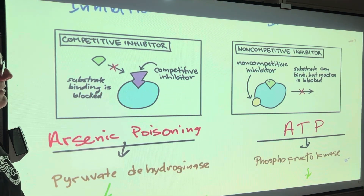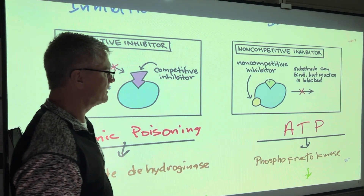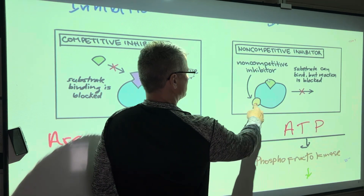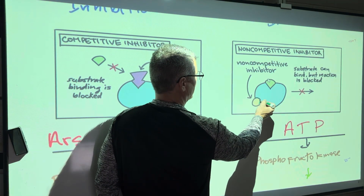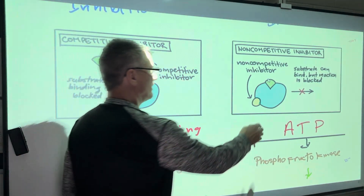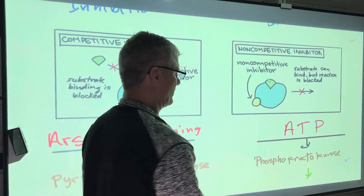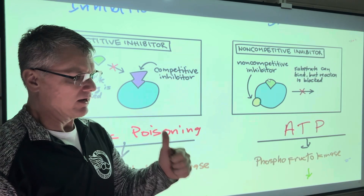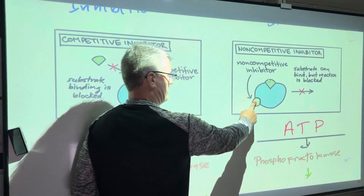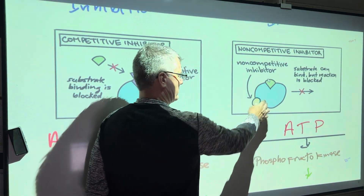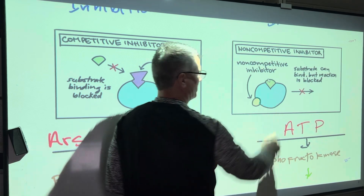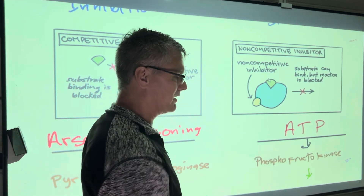For non-competitive inhibition: here's the substrate that normally should go into the enzyme, and this is the non-competitive inhibitor. Some enzymes have extra sites on their outside where other things can fit in. Remember, if you change a protein's shape, it loses its function. When this inhibitor hooks into the enzyme, it forces the enzyme to change its shape, and then the substrate that normally would go there doesn't fit anymore, stopping the chemical reaction.